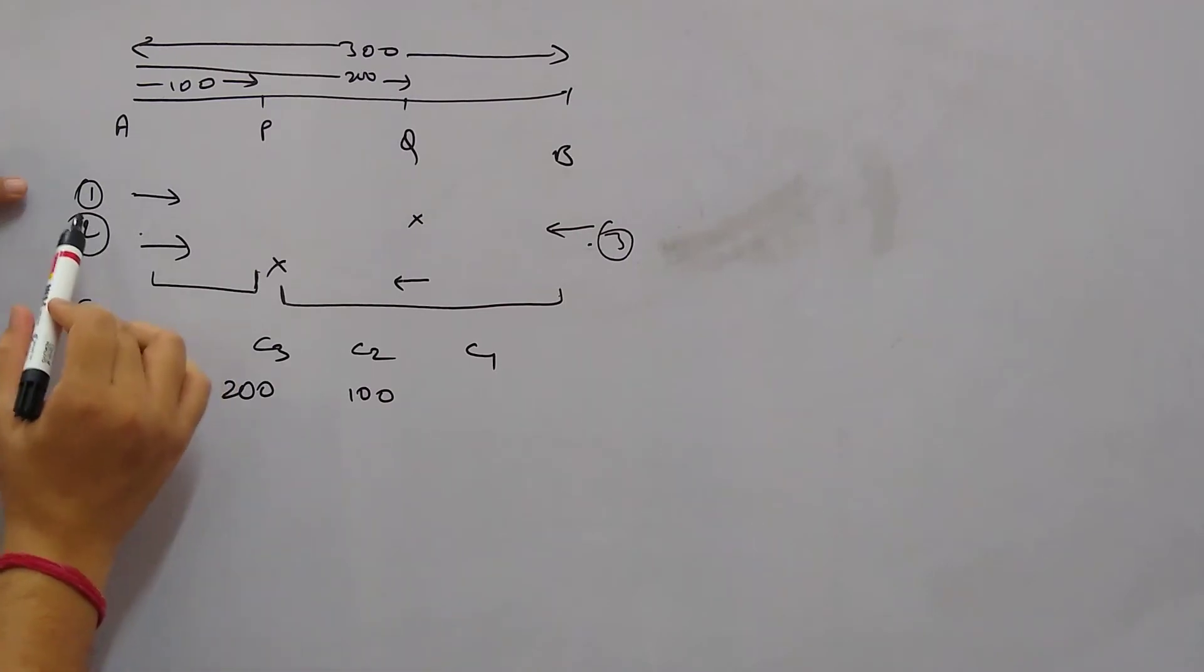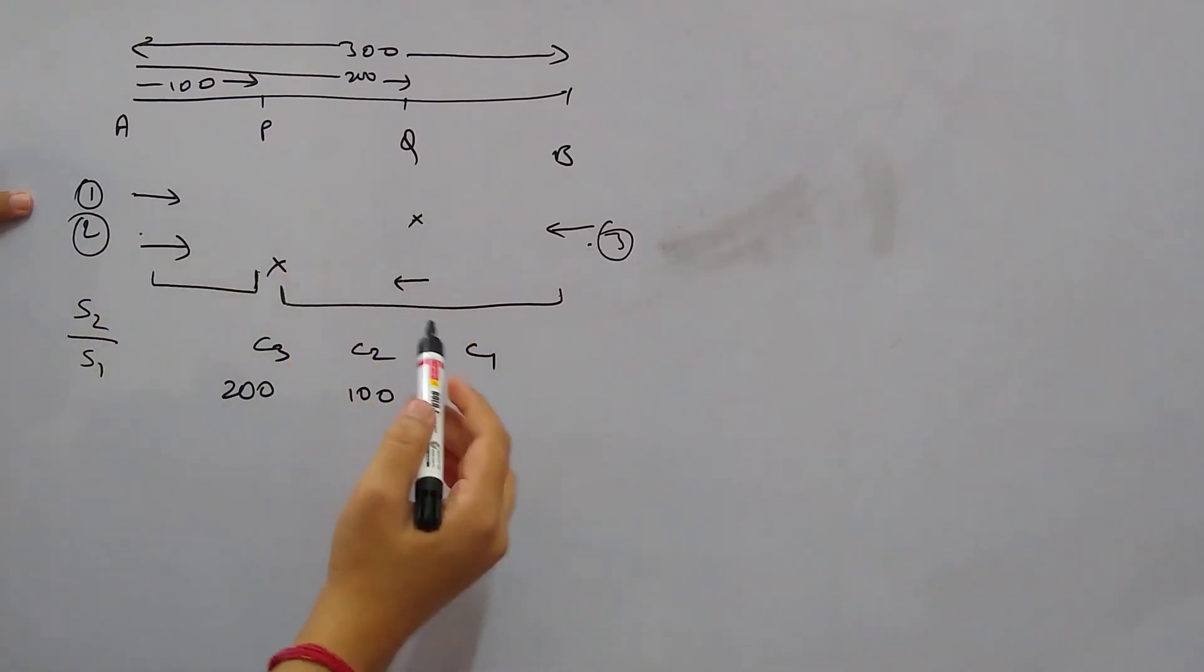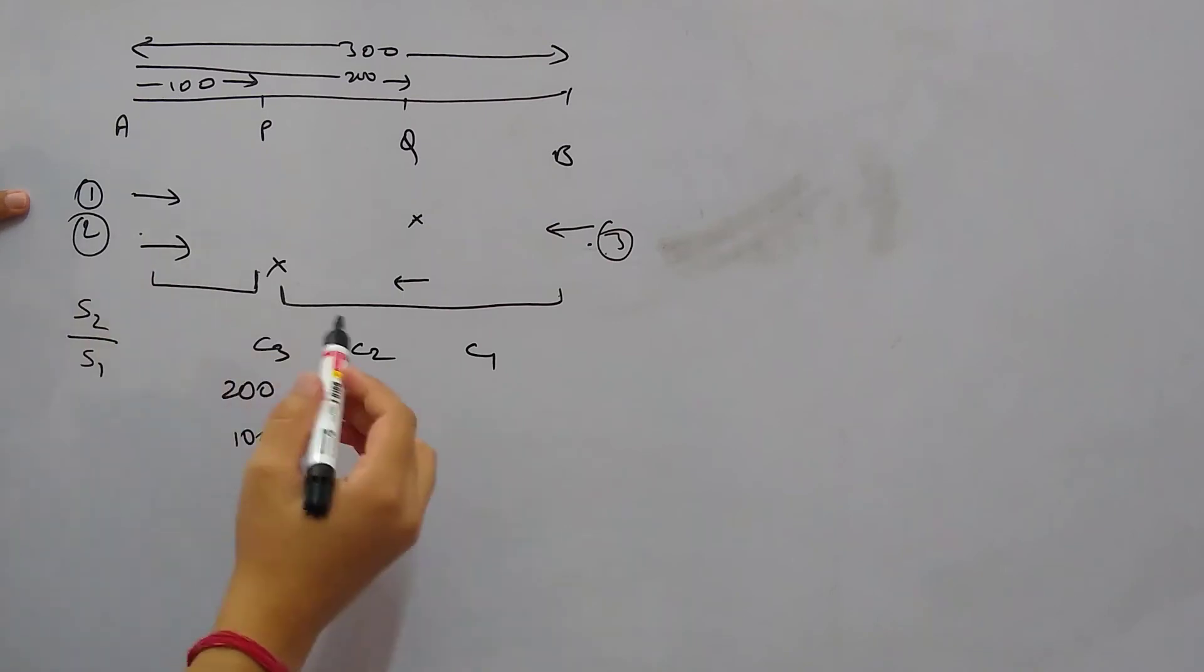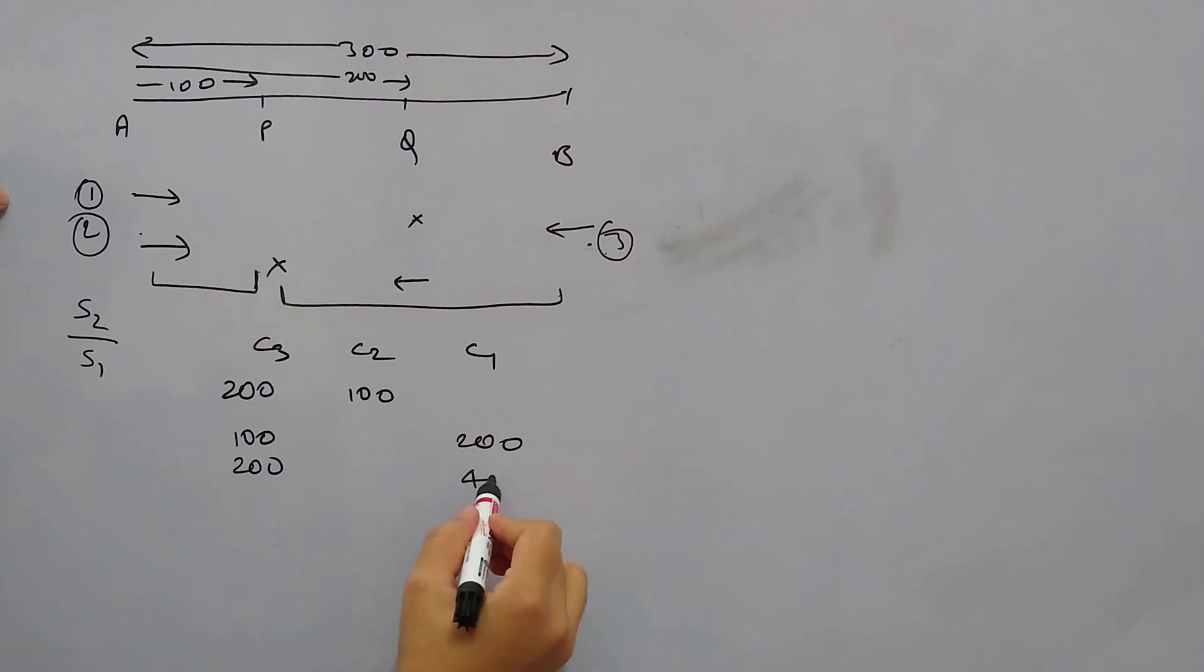Now according to the first case, when car 1 is reaching Q, car 3 is reaching Q. So car 3 has covered 100 kilometers, in the same time car 1 has covered 200 kilometers. If we multiply this by 2, that means if car 3 covers 200 kilometers, then car 1 will cover 400 kilometers.